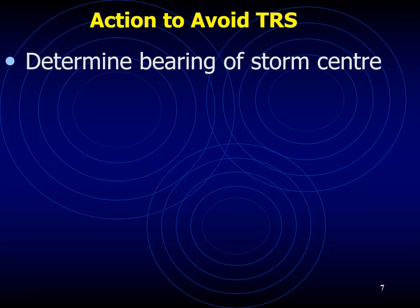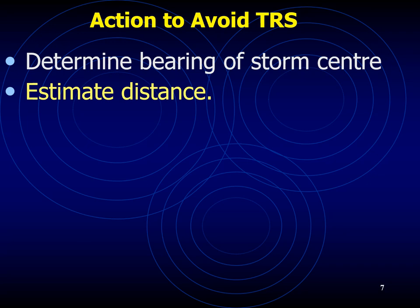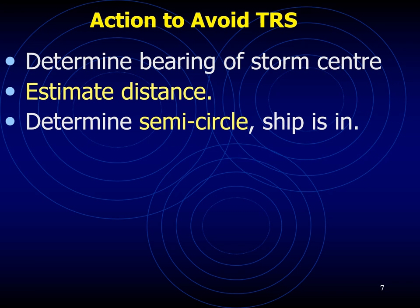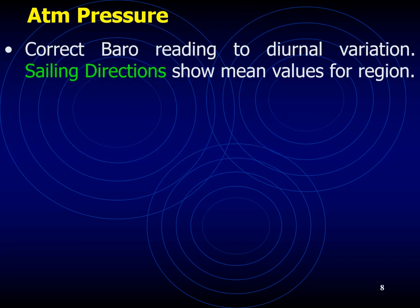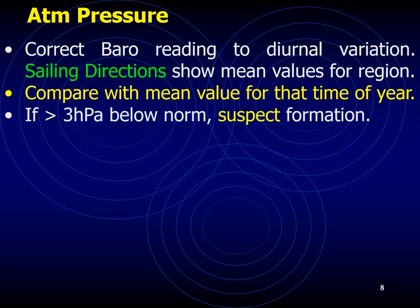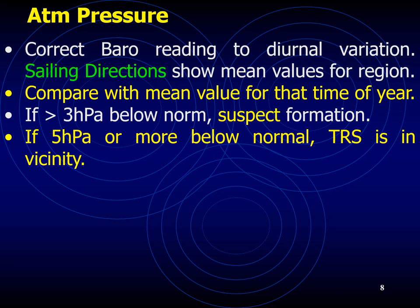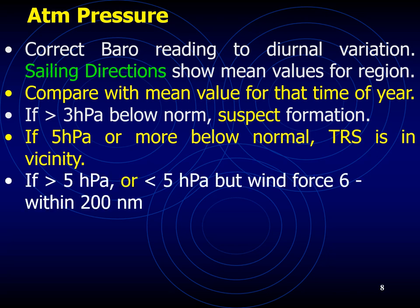In terms of action to avoid TRS: first, determine the bearing of the storm center and estimate the distance. Then determine the semicircle the ship is in and take action accordingly. Read the barometer and apply appropriate corrections — for a precision aneroid barometer, correct for height above mean sea level, index error, and diurnal variation of pressure. Compare the corrected reading with mean pressure for the time of year. If corrected pressure is more than 3 hectopascals below normal, be careful. If 5 hectopascals or more below normal, the vessel is definitely on the outskirts of a TRS.